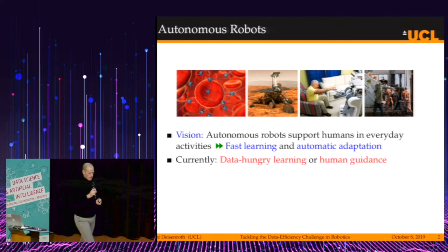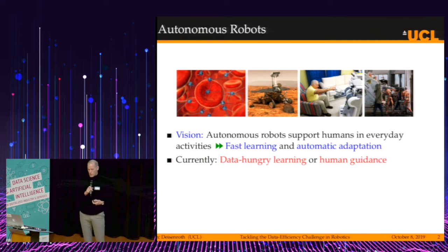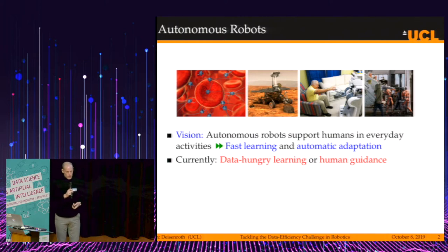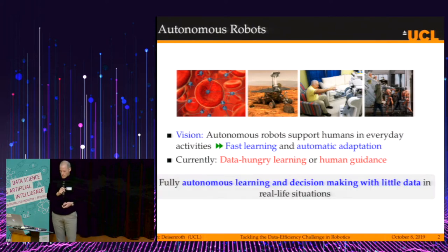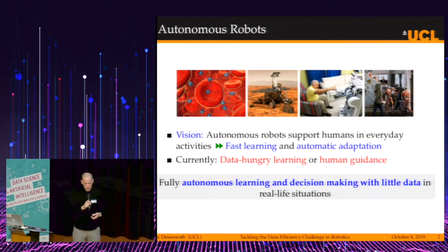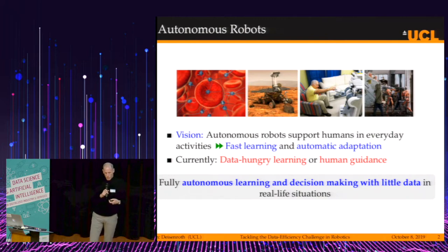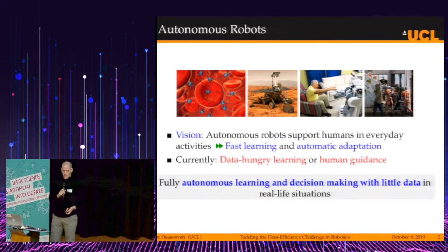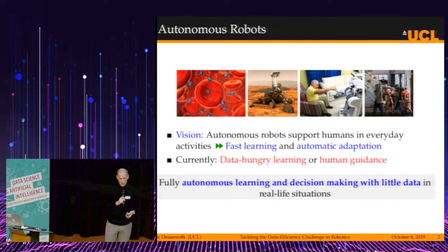The current state of the art, roughly speaking, is that autonomous learning algorithms in this context are extremely data hungry or require human guidance to get somewhere. The challenge we need to address is designing algorithms for fully autonomous learning and decision-making with little data in real-life situations. I will be using reinforcement learning as a principled mathematical framework for autonomous learning and decision-making, with learning from little data as one of the key problems.